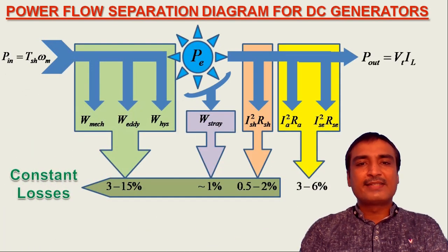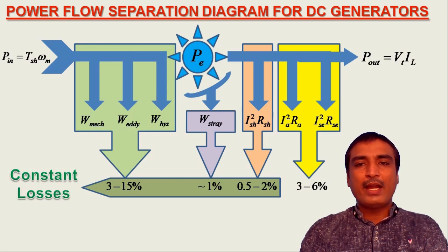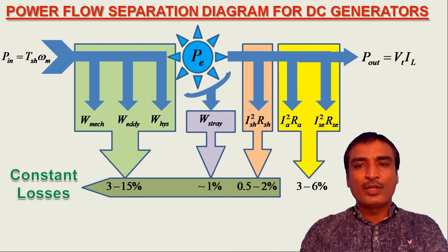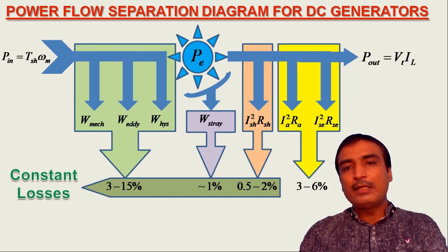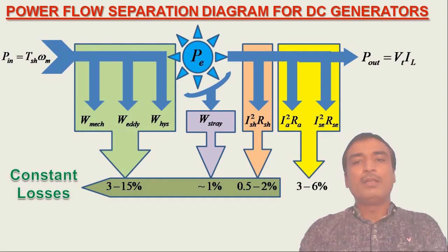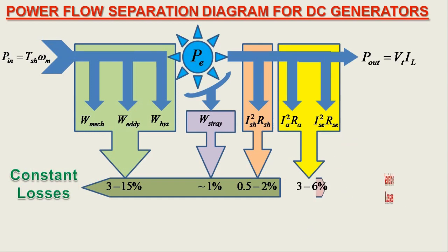On the other hand, the series field winding copper loss and the armature circuit copper losses — including interpole winding copper loss, compensating winding copper loss and brush contact loss — increase as the load on the DC generator is increased. These losses together are called variable losses.